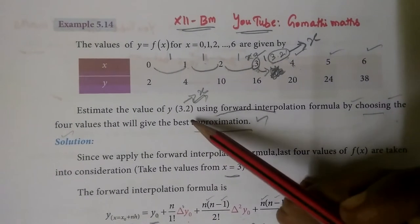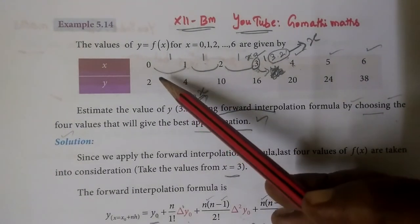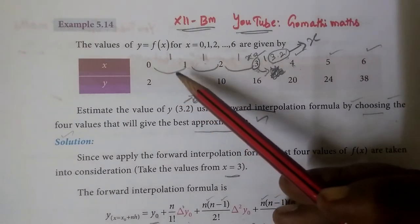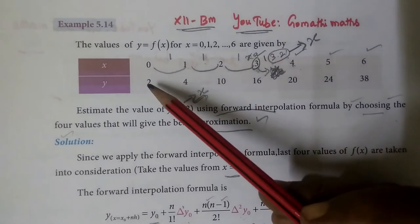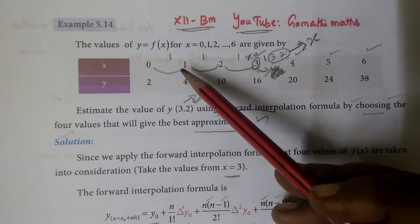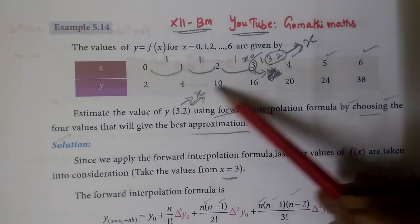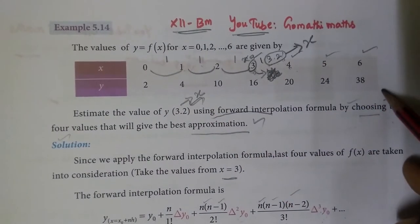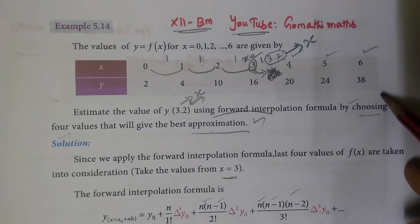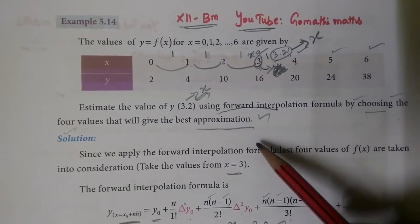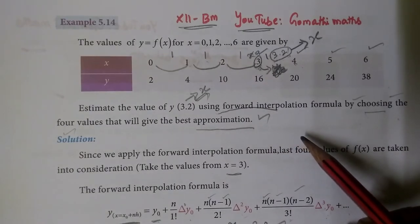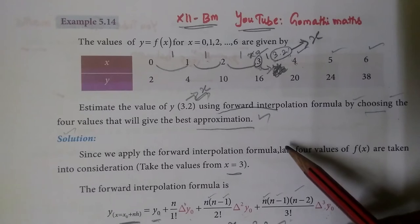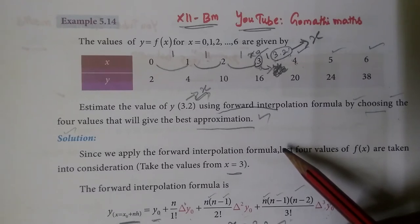For a good day, the 12th business match, example 5.14. The values of y equal to f of x for x equal to 0, 1, 2, 3, etc. up to 6 are given by x value and y value. Now 0 corresponds to y value 6, and 2 corresponds to 38. Estimate the value of y at 3.2 using forward interpolation formula, by choosing the best 4 values that will give the best approximation.